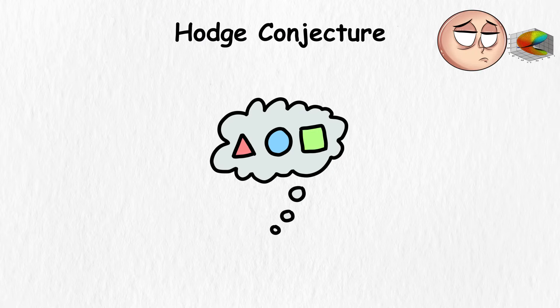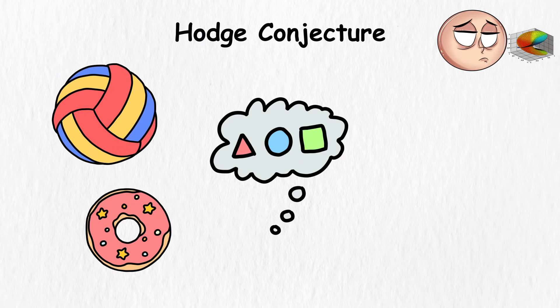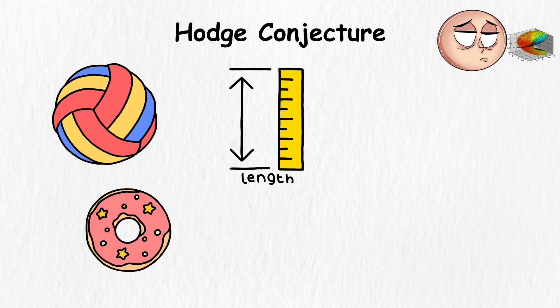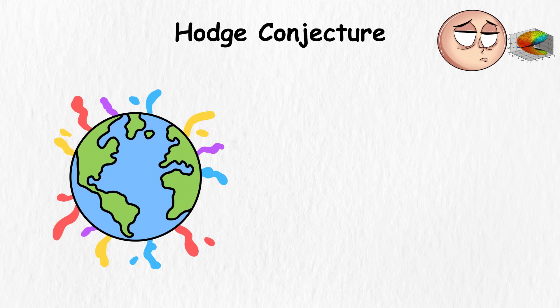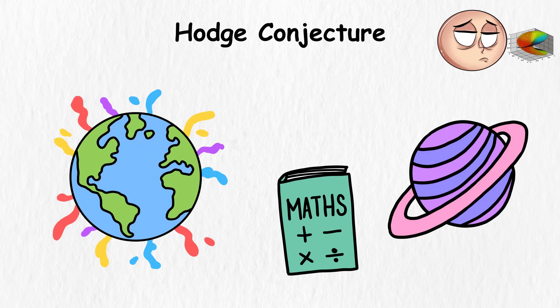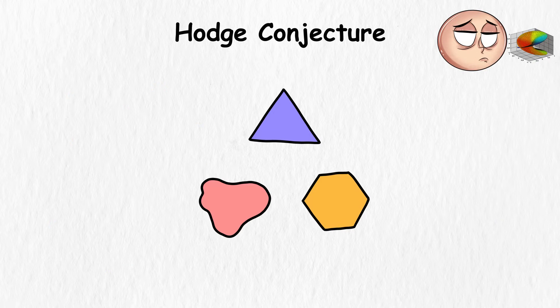Hodge Conjecture. Imagine you have a shape, like a donut or a ball. These familiar shapes hang out in three dimensions with length, width, and height. But in the wacky world of math, shapes can exist in spaces with way more than three dimensions. These wild shapes are called algebraic varieties.